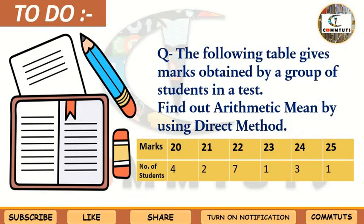Today's to-do (homework): The following table gives marks obtained by a group of students in a test — find the arithmetic mean using the Direct Method. Make sure to solve this question and send a picture to my Instagram. Students with the right answer will have their answer sheet featured in the next tutorial. This is the practical section, so practice is essential.